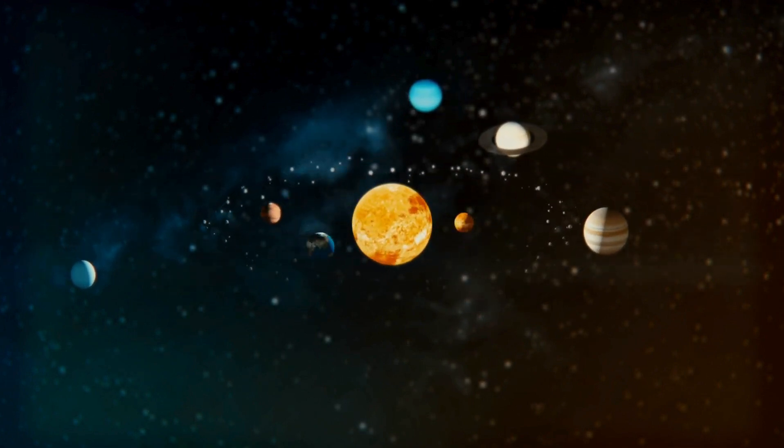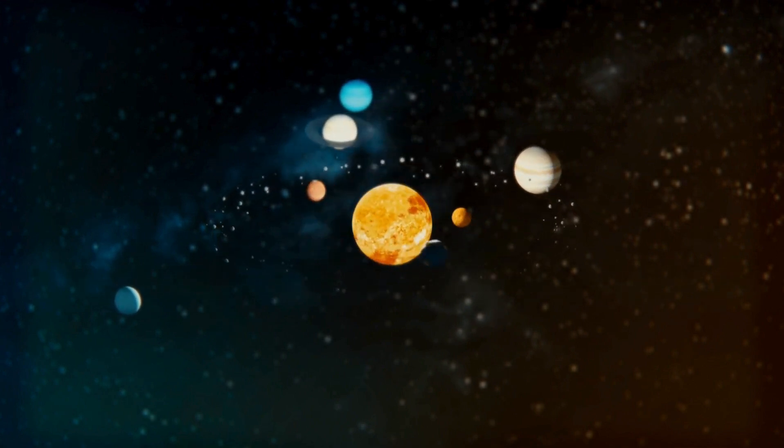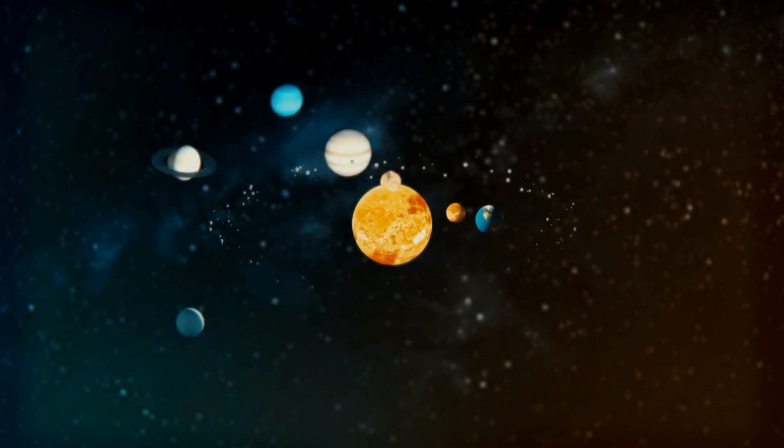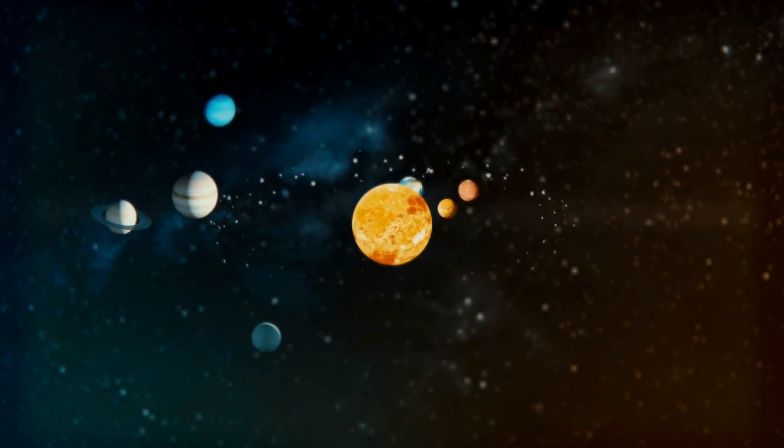While such closeness might suggest extreme heat, Proxima Centauri is a small red dwarf star that emits significantly less energy than our sun. Standing on Proxima b and gazing up at Proxima Centauri, the star would appear as a dull red orb roughly three times the size of the sun in our sky.